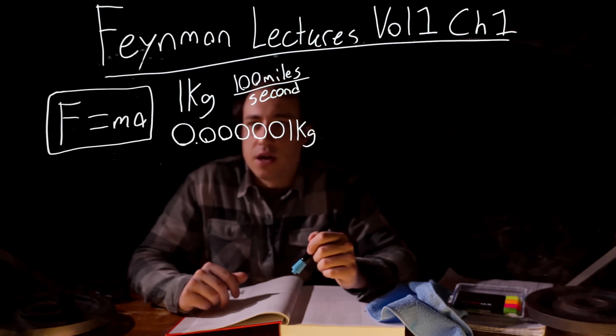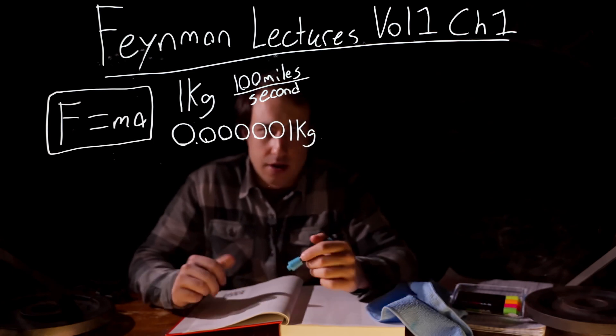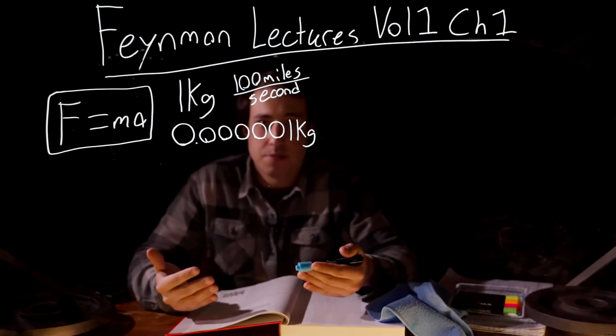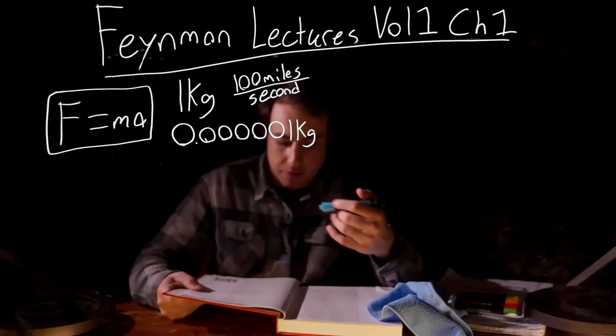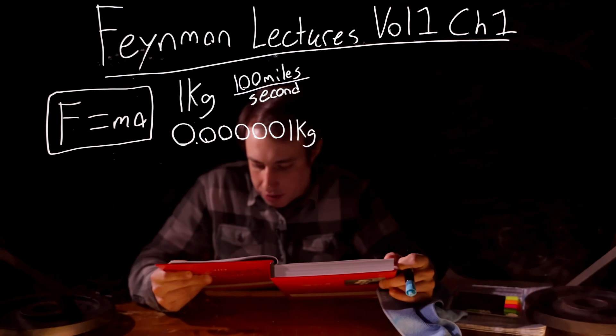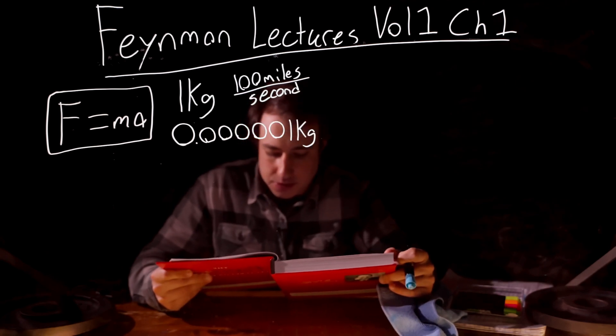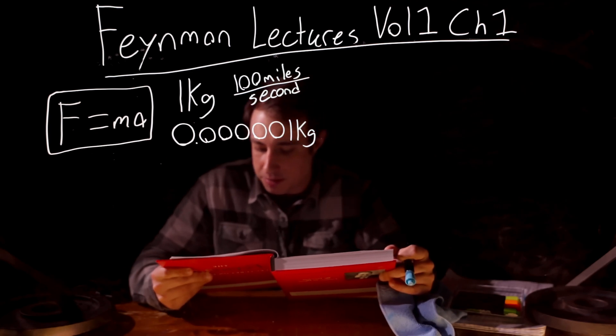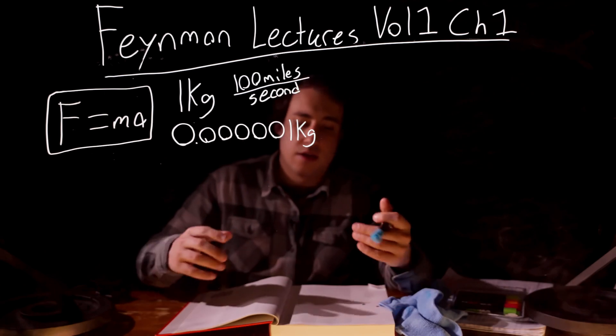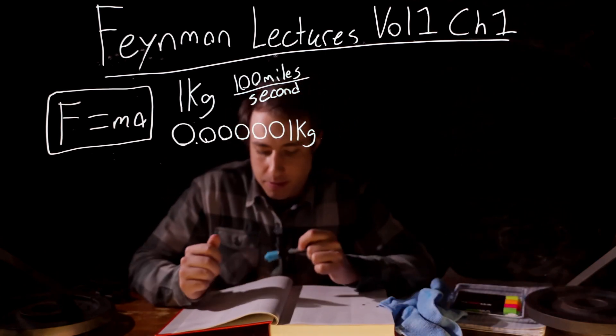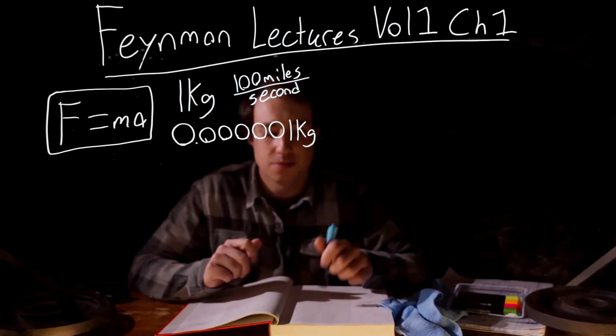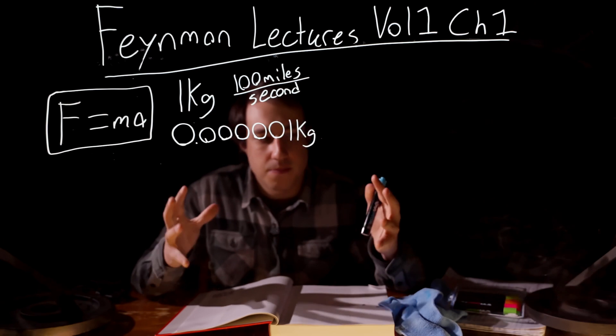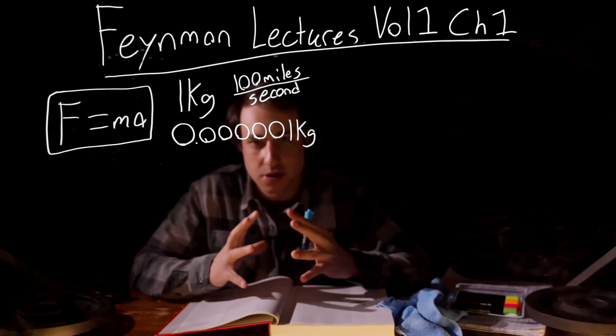From there he goes on to say what he would pass on as information if the human race were to end and have to start over again, and he could only pass down one sentence to the people starting over of all of our scientific knowledge. And that sentence is important to remember because the concept that atoms are attracted to each other, but once they are forced close enough together, they repel each other.